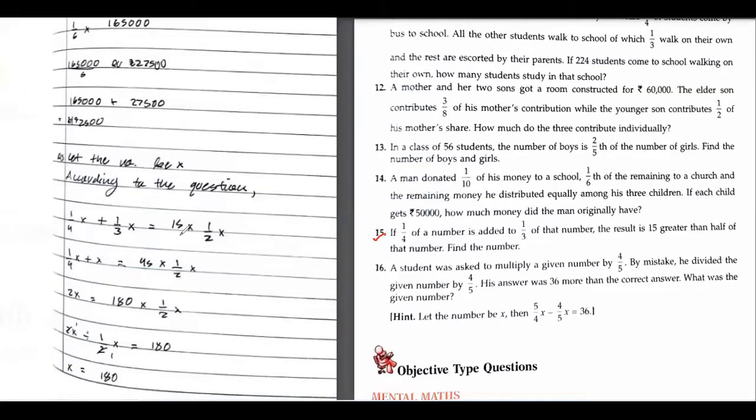Can you read question number 15? If one fourth of a number is added to one third of that number, the result is 15 greater than half of that number. Find the number.